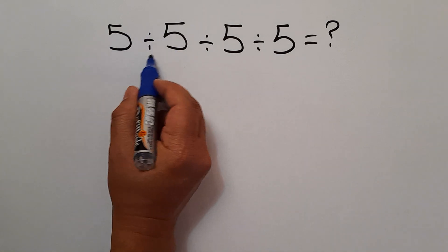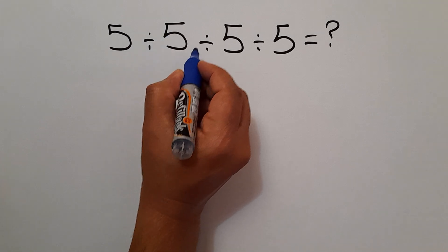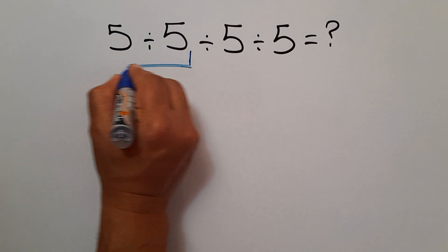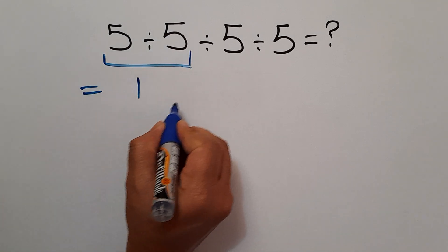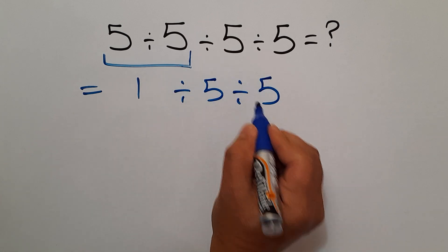So first, this division: 5 divided by 5 gives us 1. So we have 1 divided by 5, divided by 5.